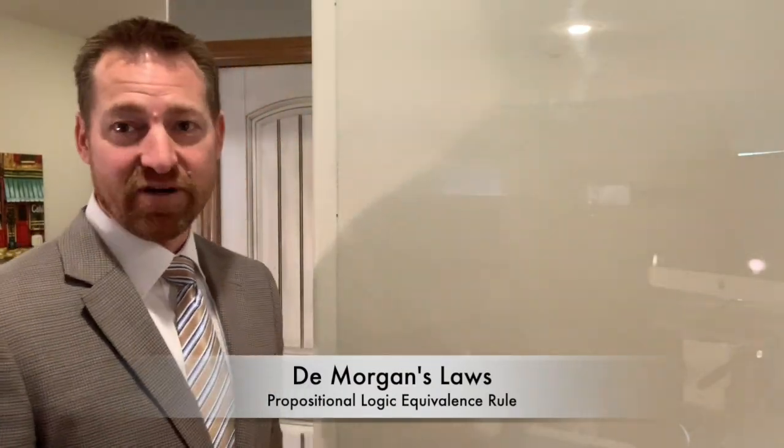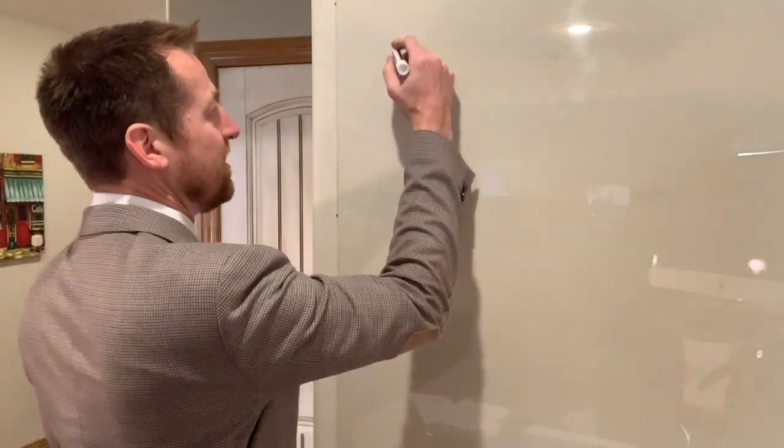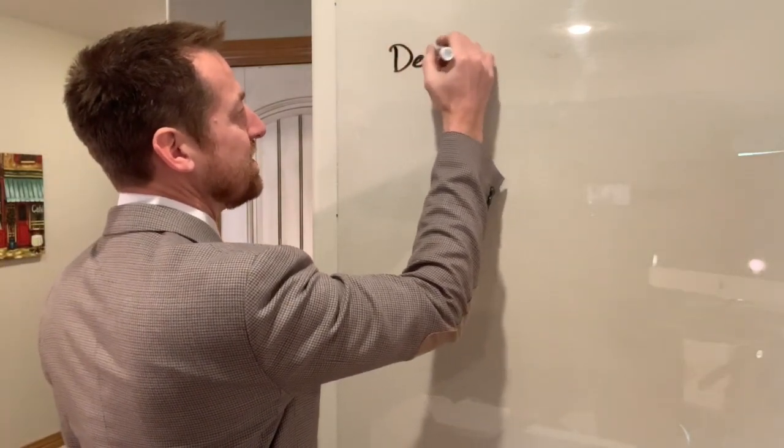So let's introduce now the rule DeMorgan's Law. So the way that that one functions, I'll abbreviate it here, capital D, lowercase e, capital M.